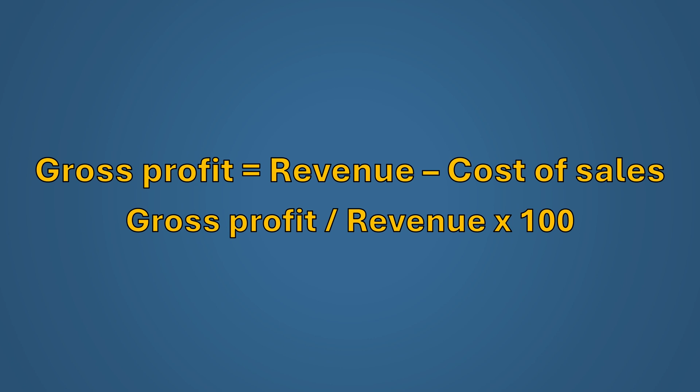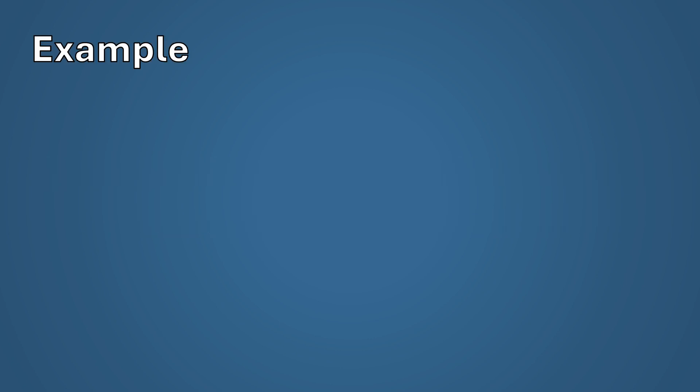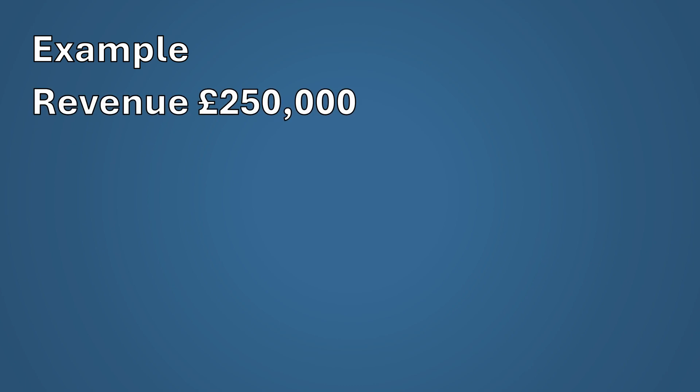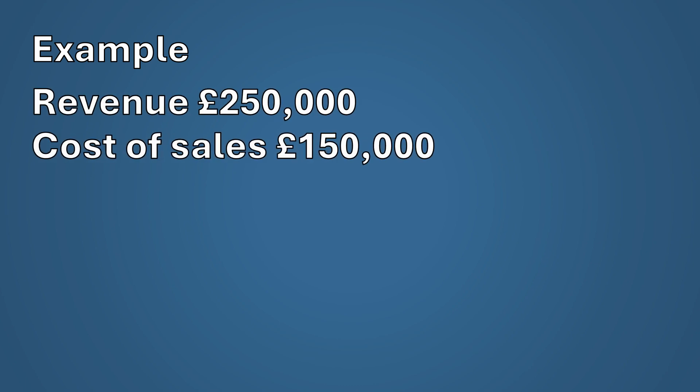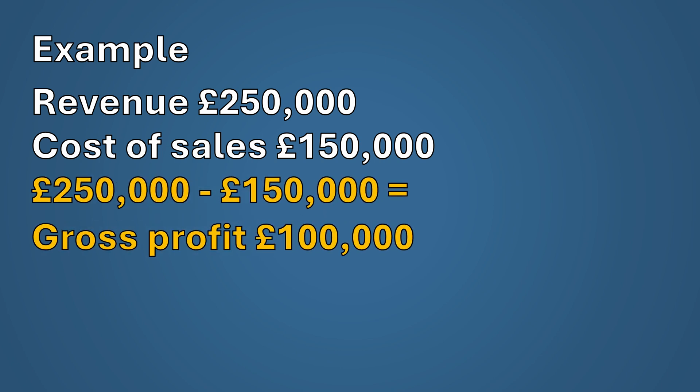Let's take a look at an example. A company earns £250,000 in revenue and its cost of sales were £150,000. First we need to calculate the gross profit, which would be £250,000 less £150,000, giving you £100,000.